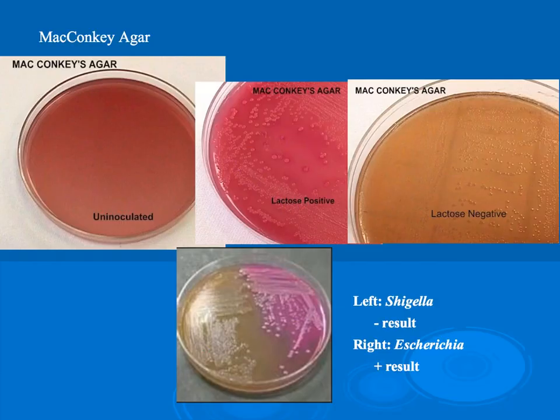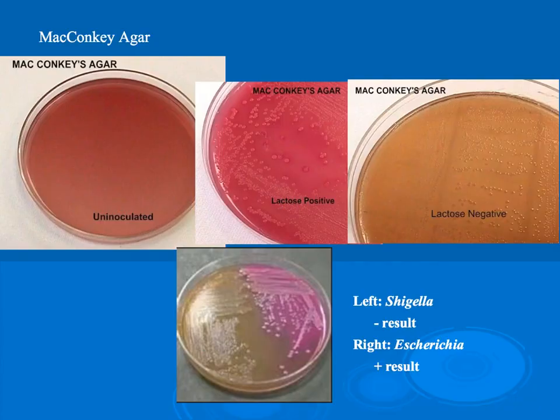Be aware that one does not want to run both MacConkey and EMB testing for unknown bacteria because both give the exact same results, and therefore you are wasting test agents. If you are taking a class where you are graded based on the minimum number of tests needed to identify the bacteria, running both EMB and MacConkey could hurt your grade. The only difference between the two is that EMB allows for quick identification of E. coli with that metallic green colony, where on MacConkey it would show up as a pink colony.